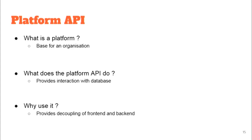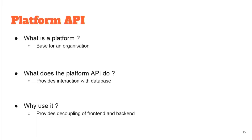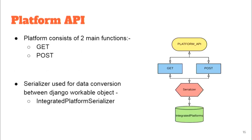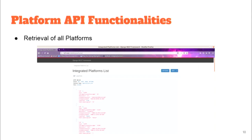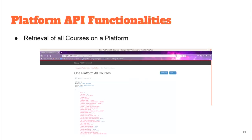Now a closer look at the platform API. A platform is a base for an organization — it acts as a server to host all resources allocated by the IITBX platform. It provides database interaction, decoupling front end and back end. It also has get and post functions: get retrieves platform details, post creates new platforms. The serializer used is the integrated platform serializer. Functionalities include platform creation, retrieving one platform's details, all platforms' details, or the courses on a particular platform.